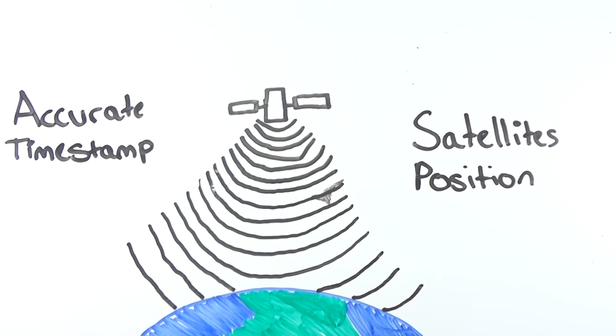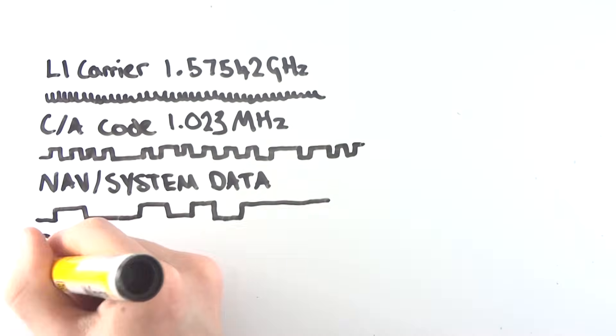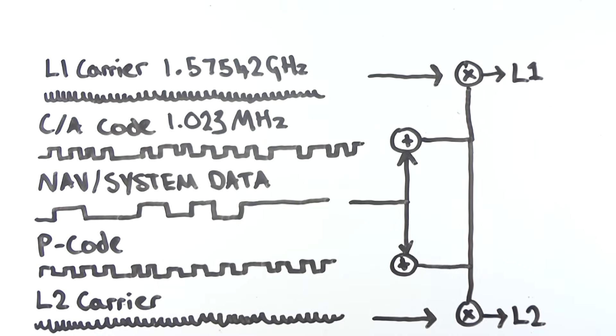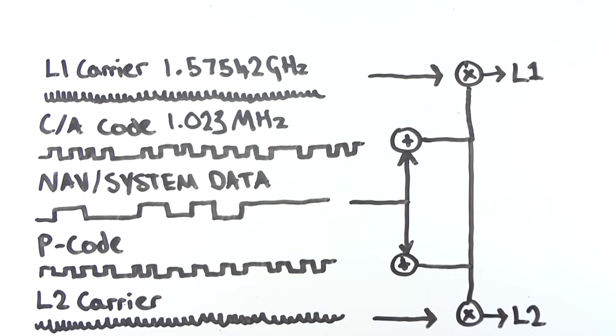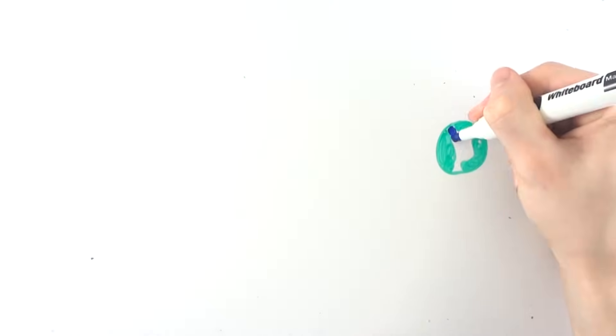The satellites also broadcast their position at the time of broadcast, with all GPS signals broadcasting at 1.5752 GHz and 1.2276 GHz. These two bits of information allow you to work out your position on Earth.